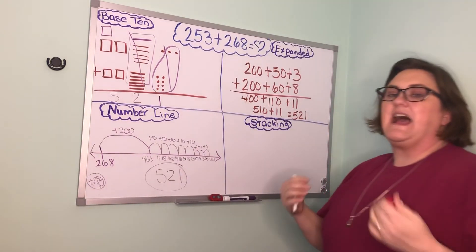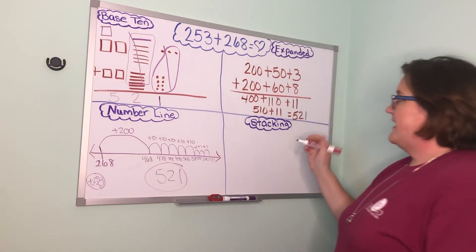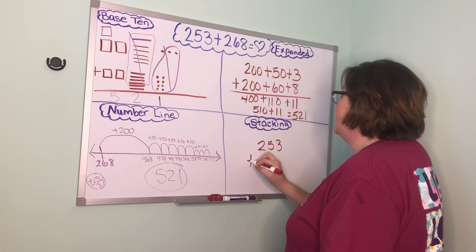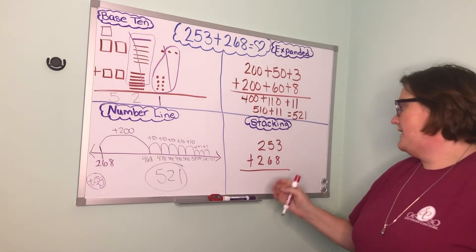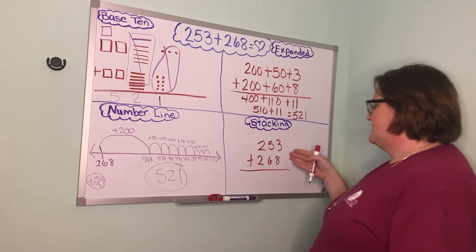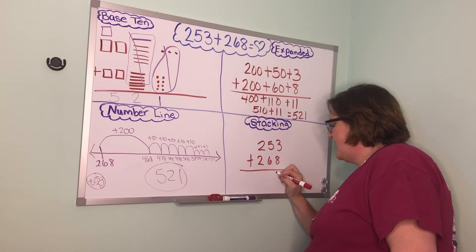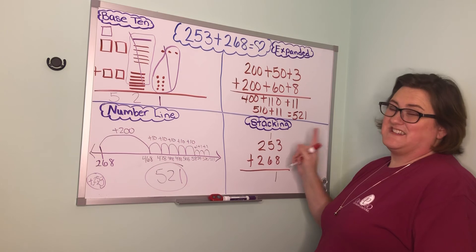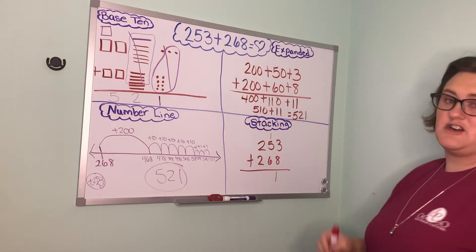And then our last method strategy that we can use is stacking. Again parents if you're watching stacking is what you and I learned in school. So we simply rewrite our problem 253 plus 268. The important thing here is that you write neatly and you line up your ones, you line up your tens, you line up your hundreds. So I'm ready to always start with my ones. 8 plus 3 is 11. So I'm going to write the 1 down here and carry that 10 over. Do not forget to carry that 10. I've seen some of our work where we're forgetting to carry that 10 and it does mess our answer up.